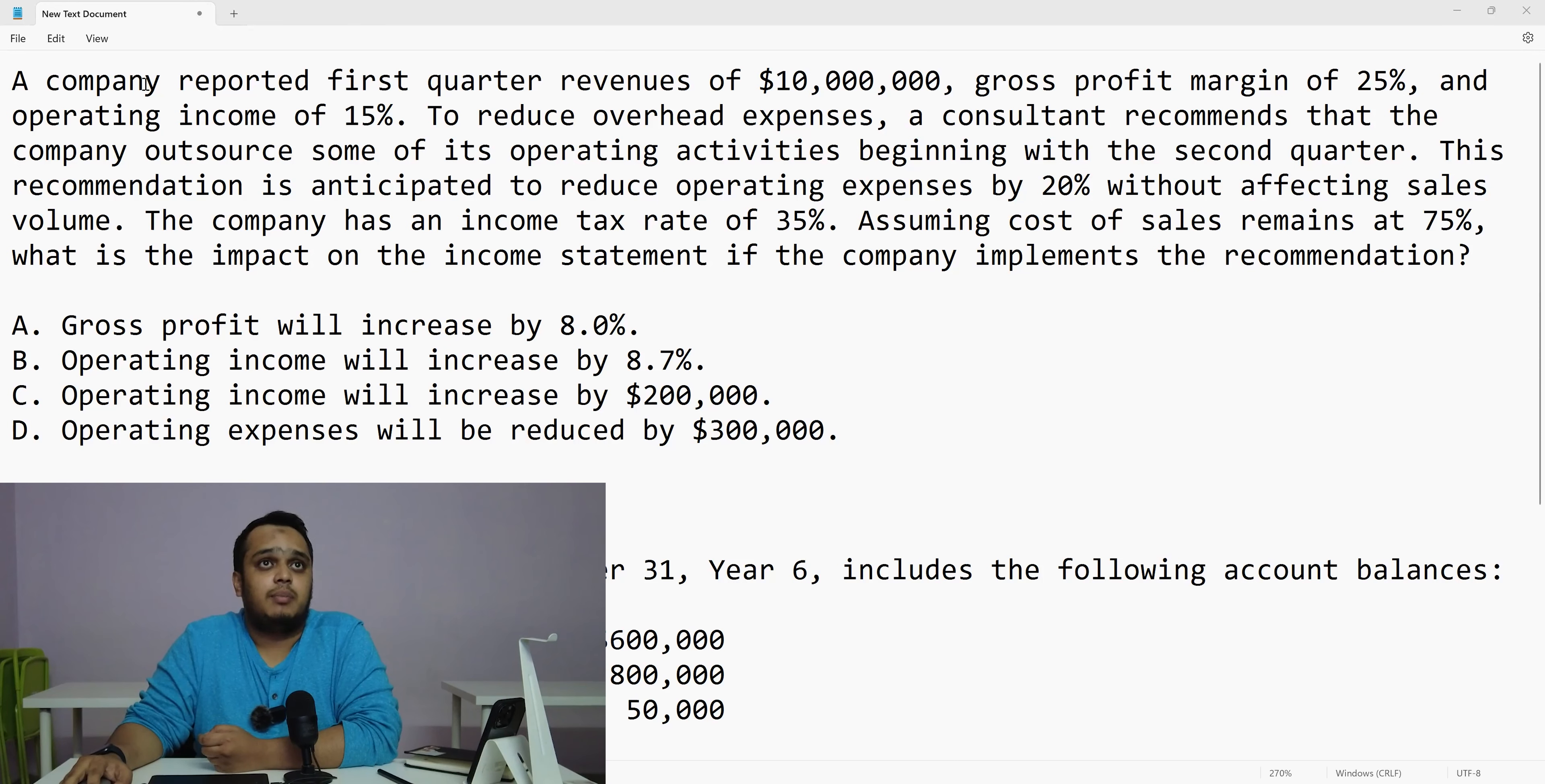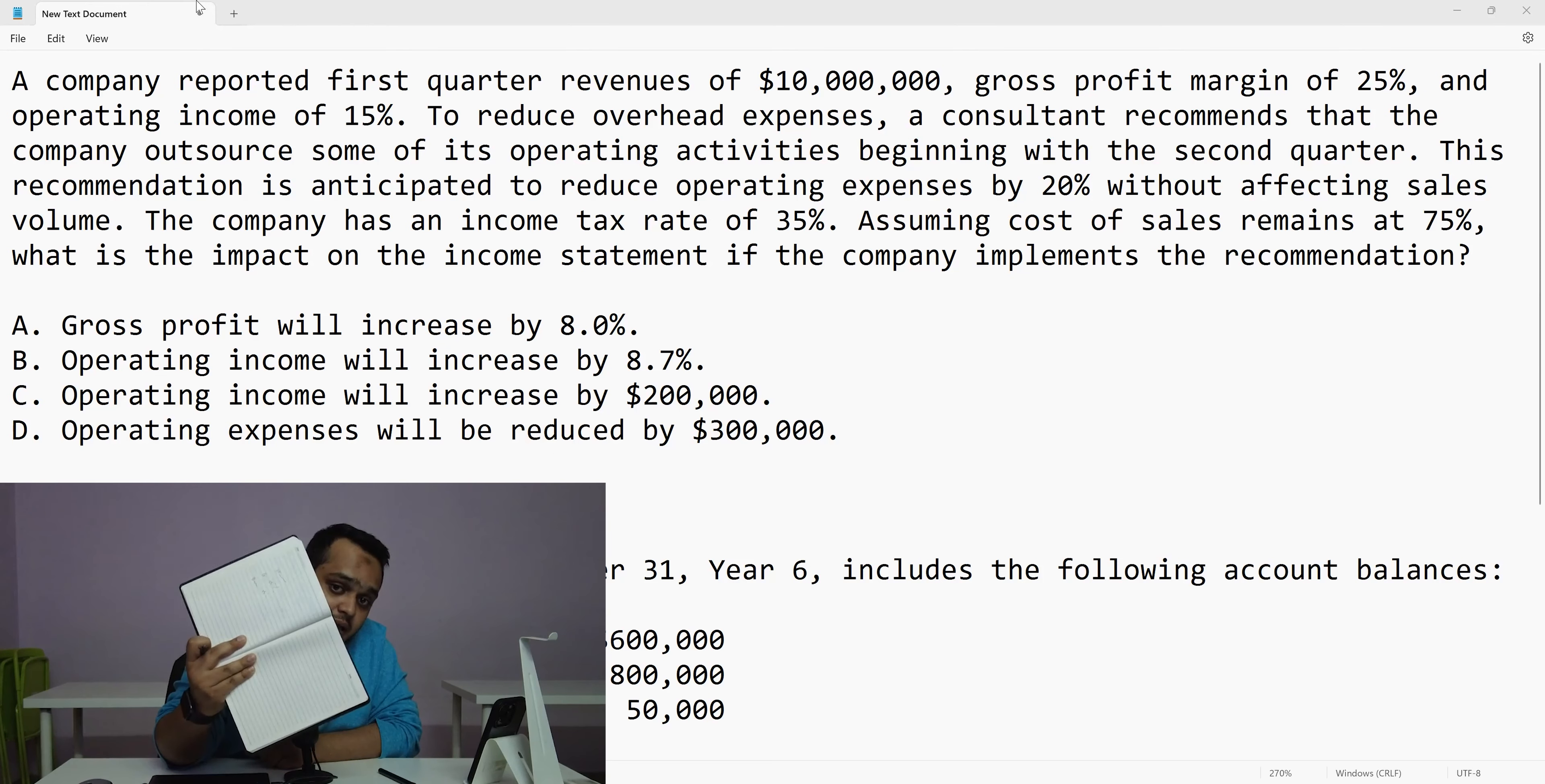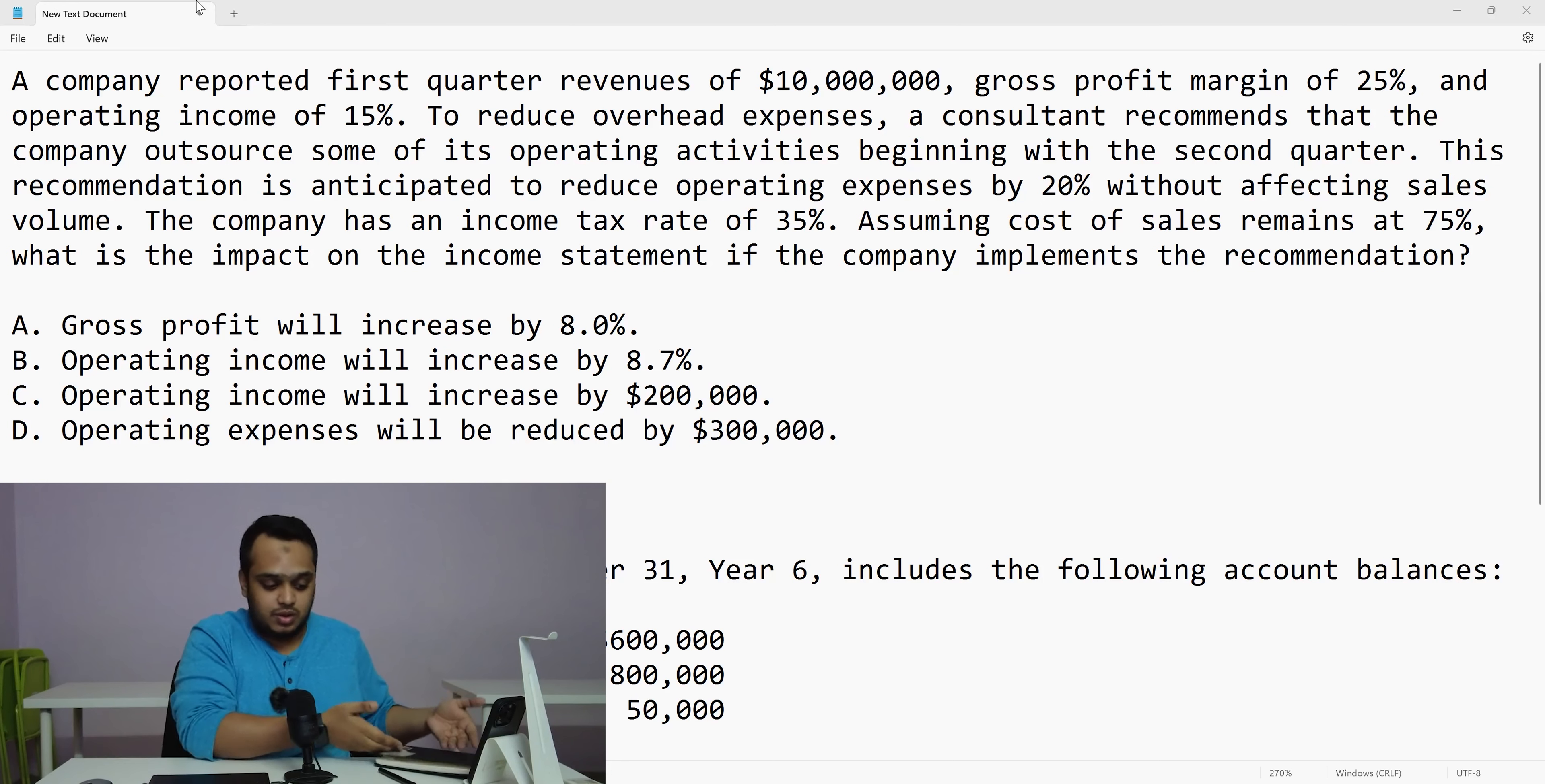So here we start, a company reported first quarter revenues, 10 million. Gross profit, 25%. Operating income, 15%. So whenever you see here, the best way to solve this is, take a pen, take a paper, write it down. Sales, 10 million. Gross profit, 25%. Operating profit, 15%. Write that down. It will give you a lot of clarity.